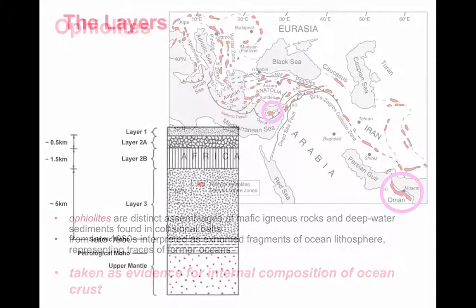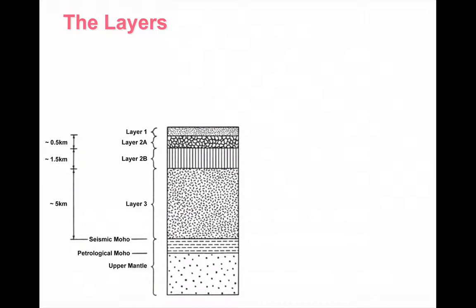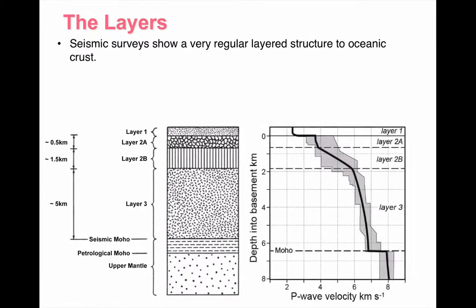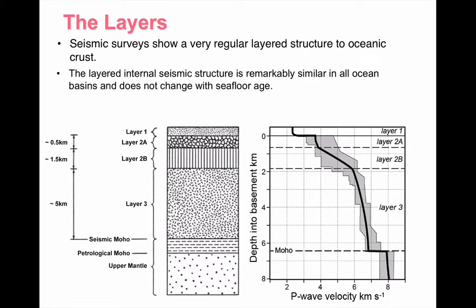The second piece of evidence, which shows us more about the structure of the crust — and in particular showing us how we have a layered structure within the oceanic crust — comes from seismic evidence. If we look at the changing speed of seismic waves as they pass through the oceanic crust, we see there are some distinct changes. These we can link back to layers, and particularly we find this in a very uniform way across all ocean basins — we don't see any changes either between oceans or even with different ages of rock in oceans.